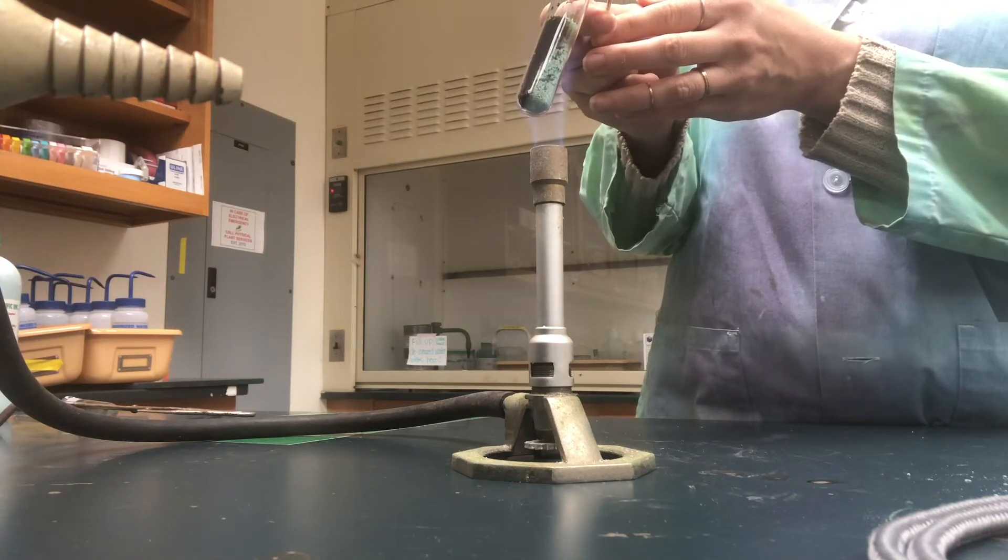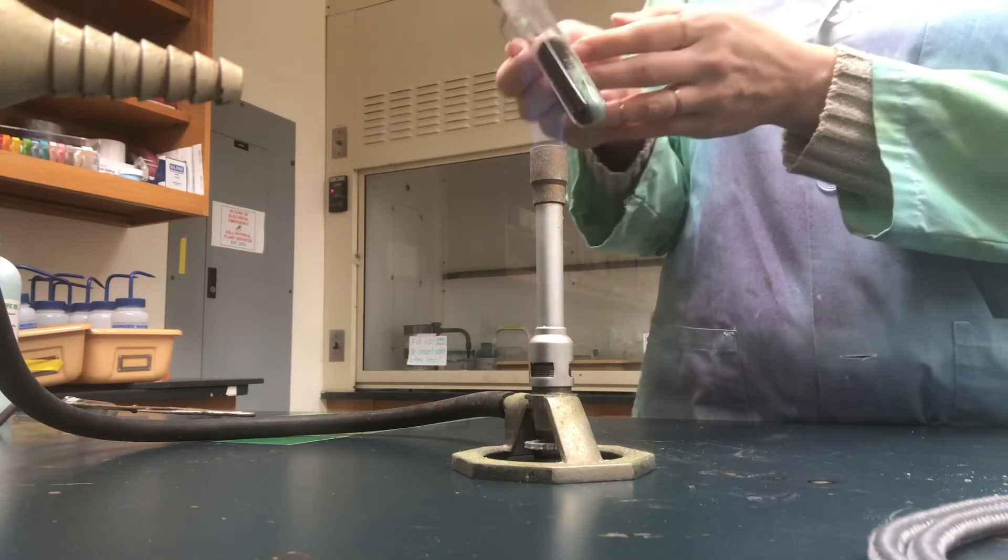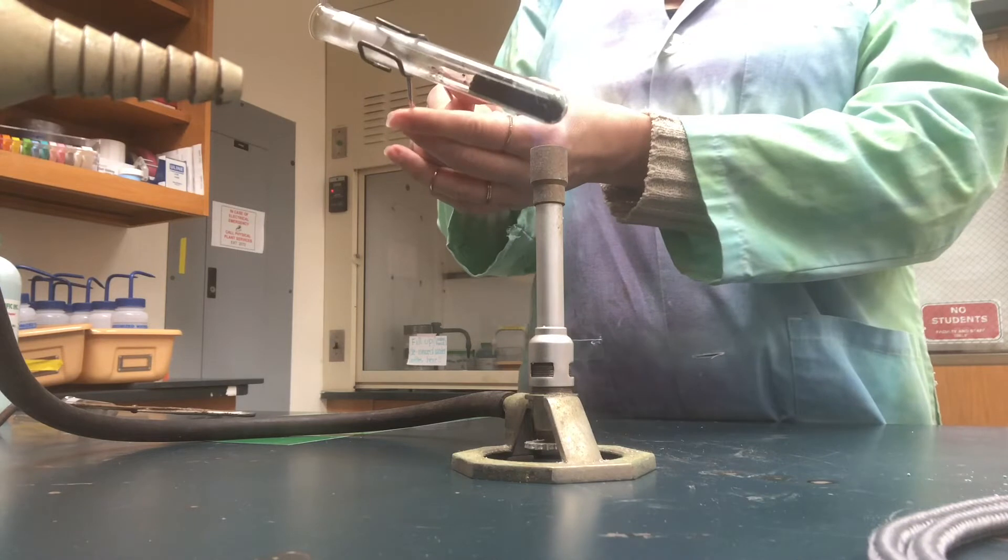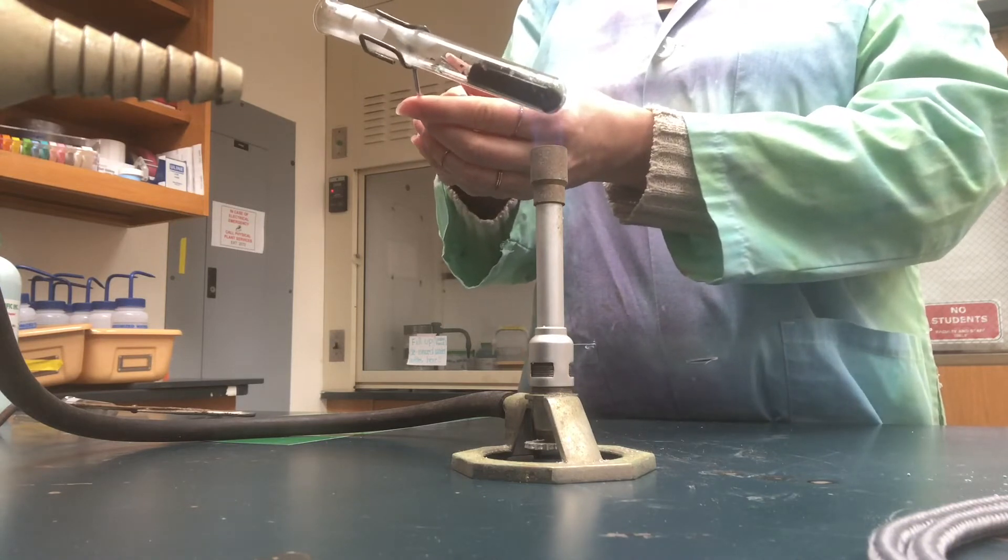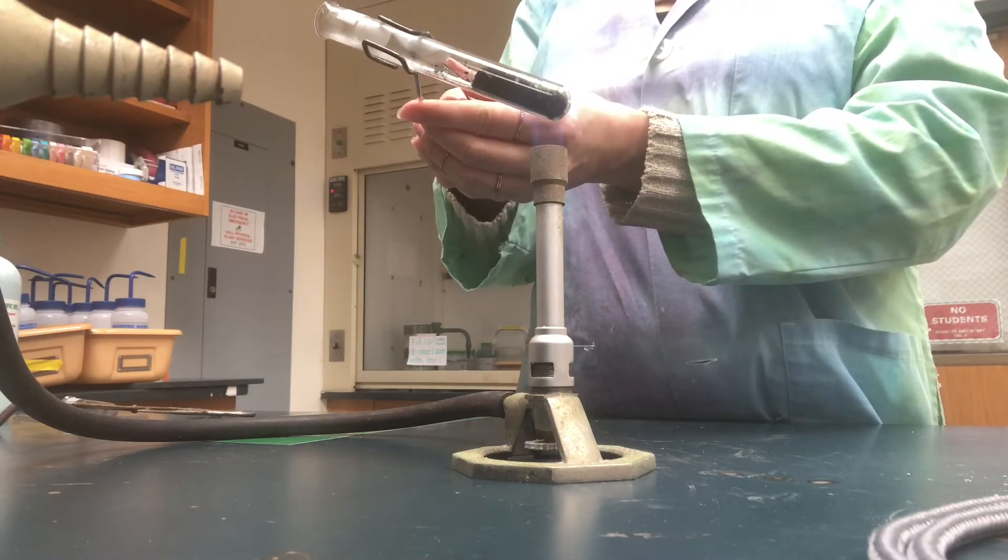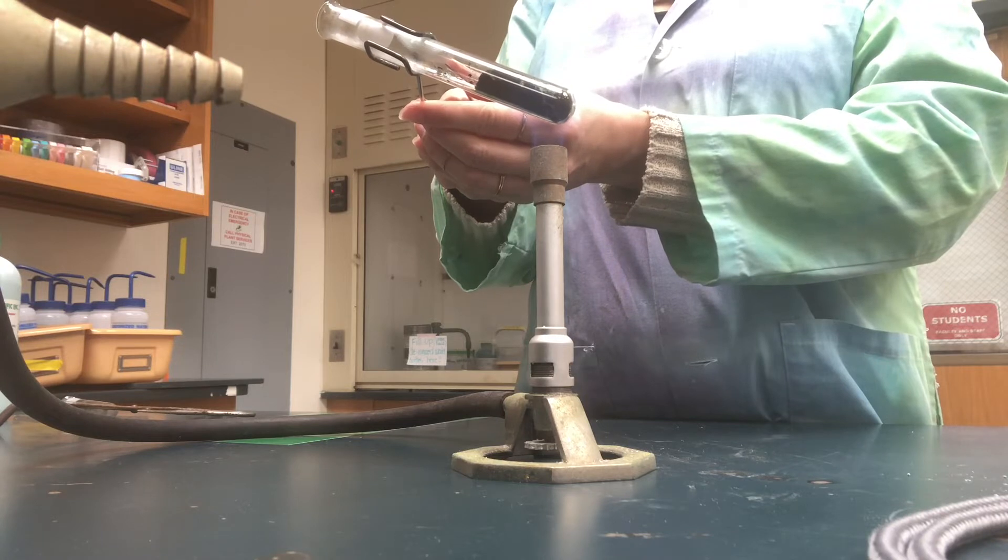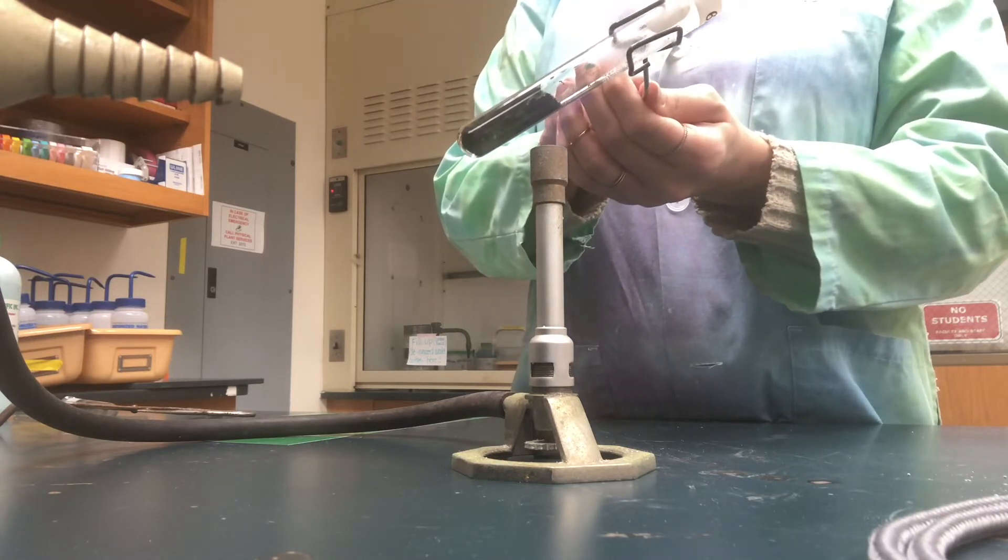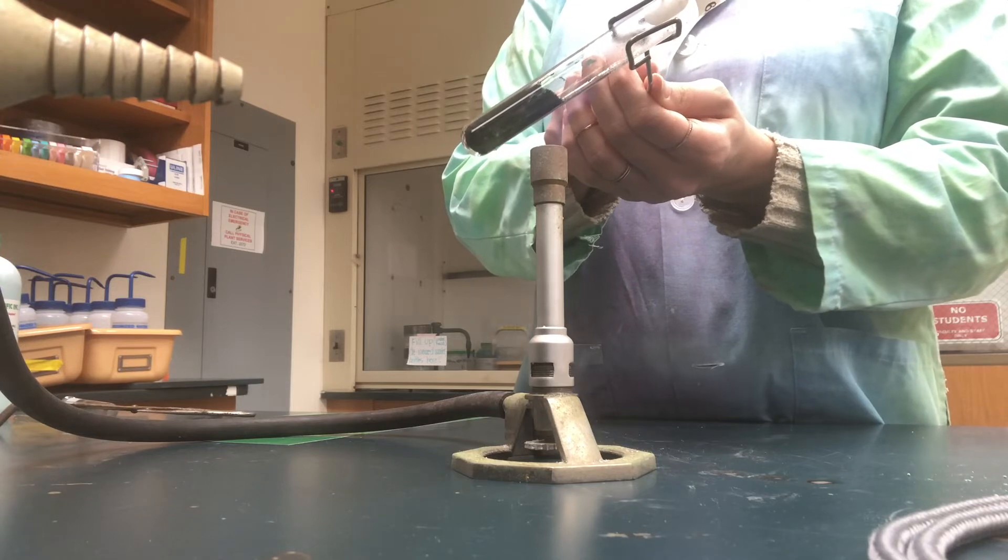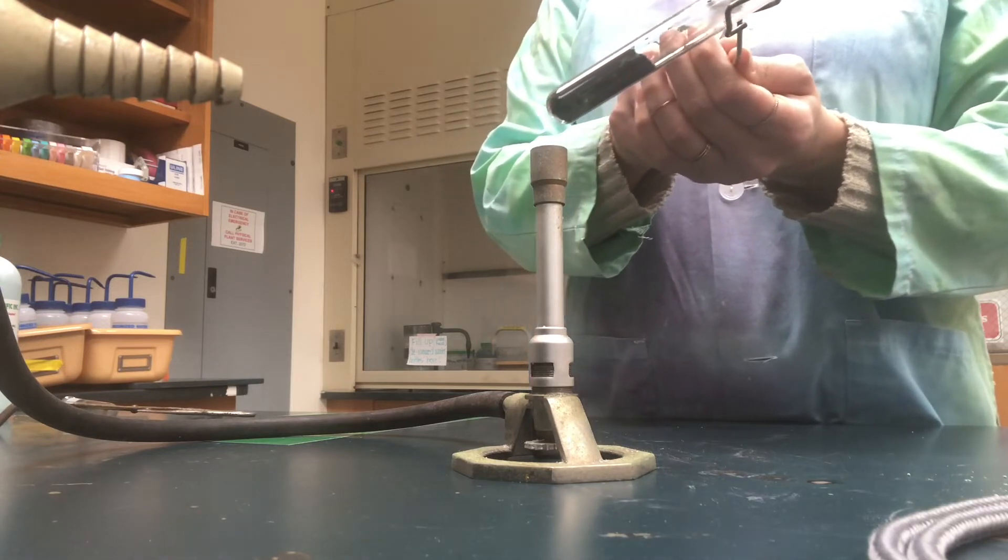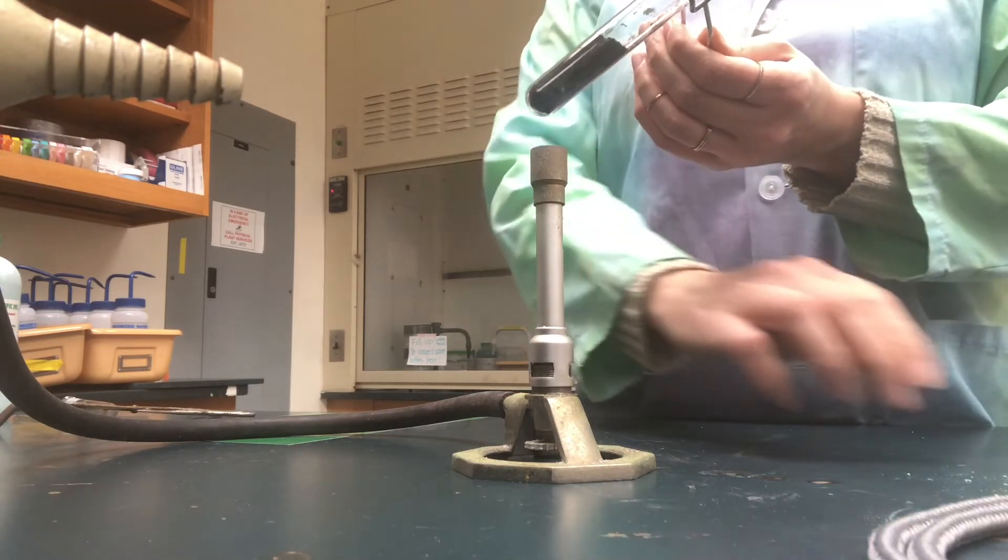In a minute here I'm going to do something called a wooden splint test. A wooden splint test is used to check for the identity of the gas that's being produced. One of our products here is a gas. Our compound is going through a chemical change. Atoms are rearranging and forming into new things and those new things have new identities.